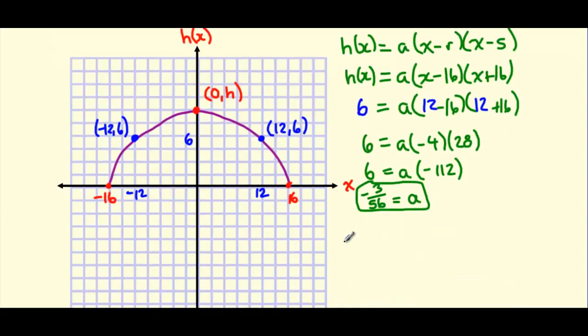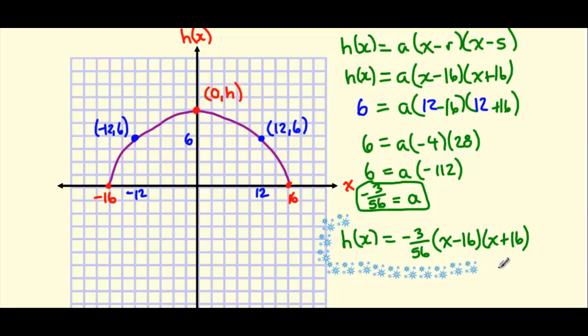So let's finish up our equation here by now writing in our a value. So negative 3 over 56 times (x minus 16)(x plus 16). We weren't told that this had to be in standard form, so we're just going to leave it in factored form, just like this. So this is our final equation here.